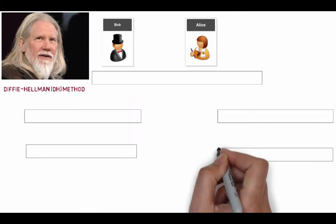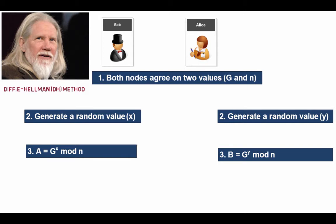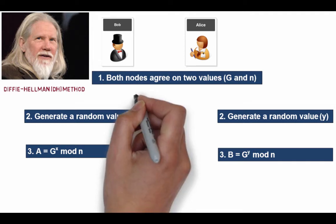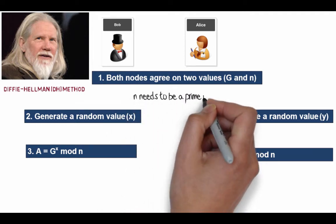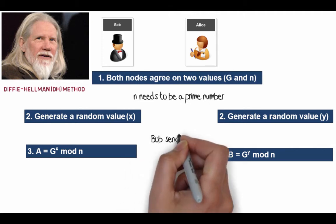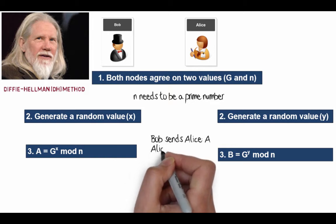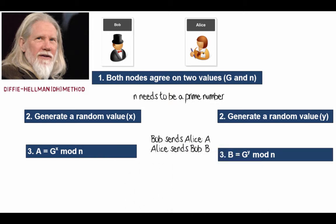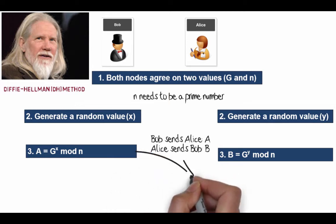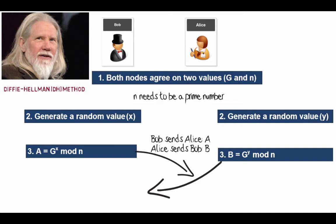This was answered by Whitfield Diffie, who created the Diffie-Hellman method — a precursor to public key encryption. Bob and Alice agree on two values, g and n. Bob creates a random value x, Alice creates y. Bob calculates A = g^x mod n, and Alice calculates B = g^y mod n. The value of n needs to be a prime number, possibly a very large one. Bob sends A to Alice and Alice sends B to Bob. Even though Eve is listening, she shouldn't be able to generate the same shared key.